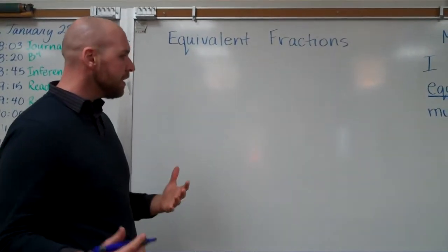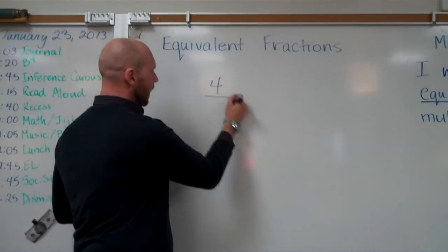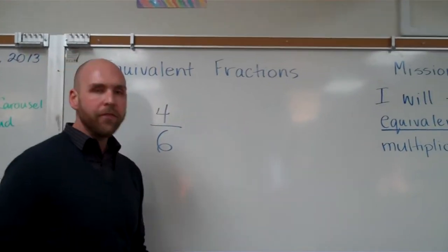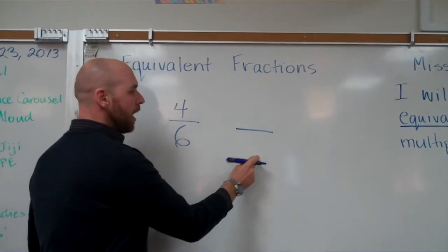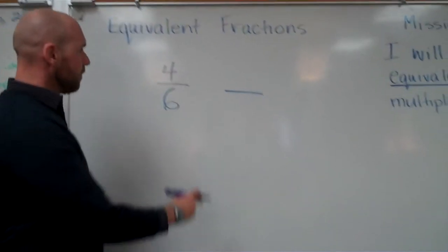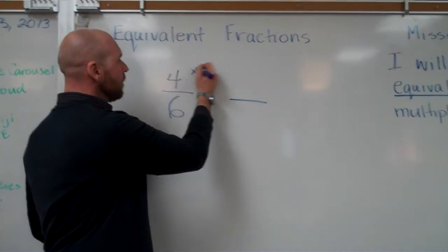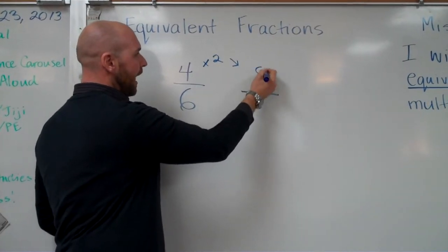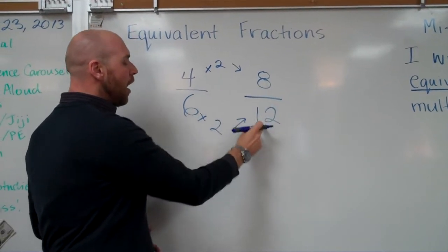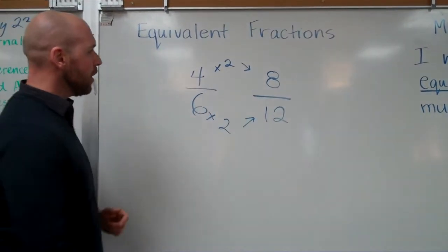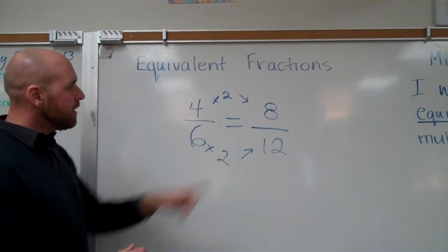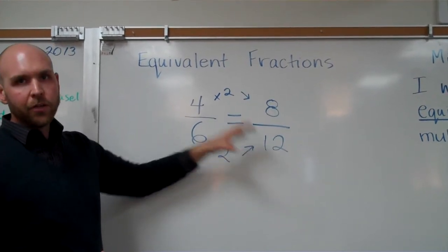So let's take something really simple like four-sixths. Now how do I make four-sixths, how do I get an equivalent fraction for four-sixths with a different numerator and a different denominator? Well, let's try multiplication, something really simple, let's just double it. Four times two equals eight, six times two equals twelve. Eight-twelfths is an equivalent fraction to four-sixths. So there's one example of an equivalent fraction. Different numerator, different denominator, but it's equivalent.